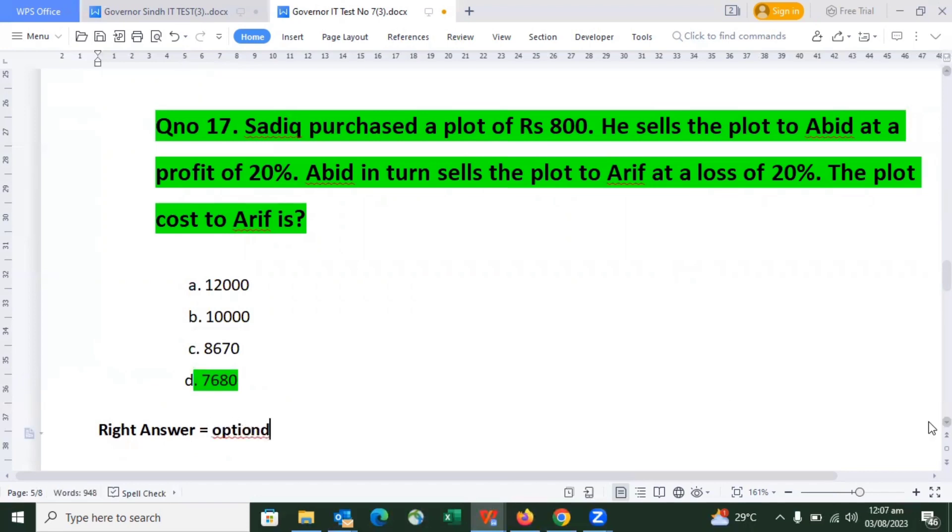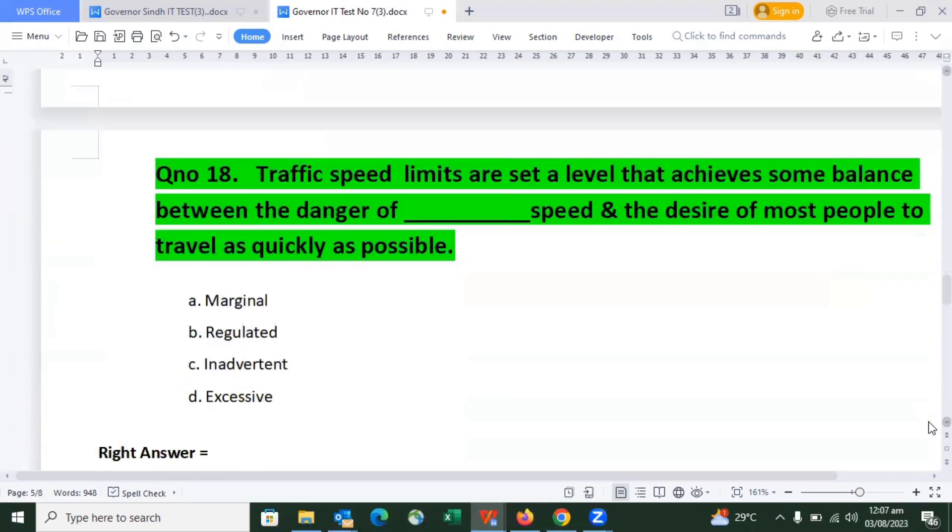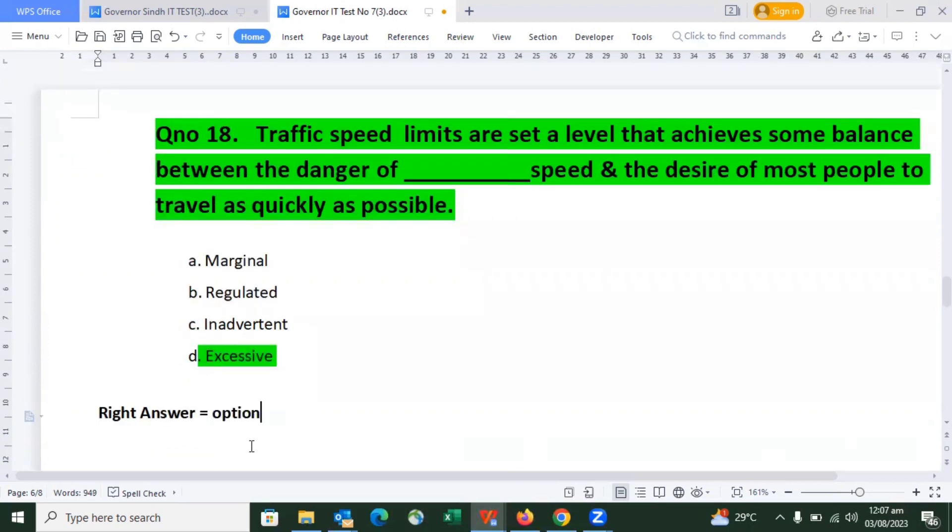There are many repeated questions. Traffic speed limits are set at a level that achieves some balance between the danger of excessive speed and the desire of most people to travel as quickly as possible. Excessive is the right answer, option D.